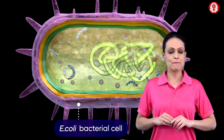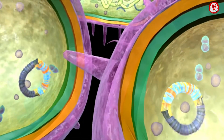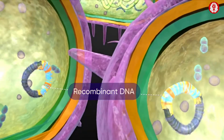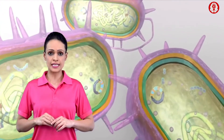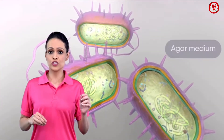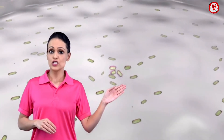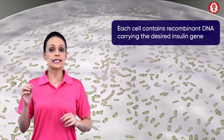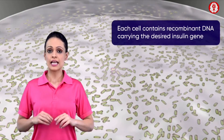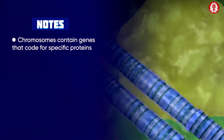The recombinant DNA is then mixed with E. coli bacterial cells. Some of the bacterial cells take up the recombinant DNA. Those bacterial cells containing the recombinant DNA are then introduced into the agar medium for growth. The bacterial cells then divide to give rise to thousands of cells, each containing recombinant DNA carrying the desired insulin gene.